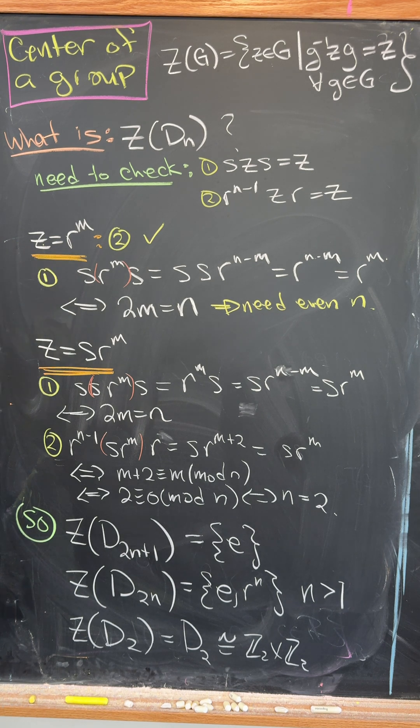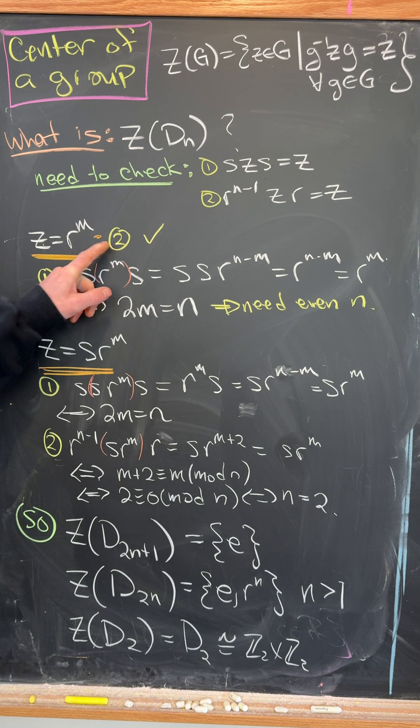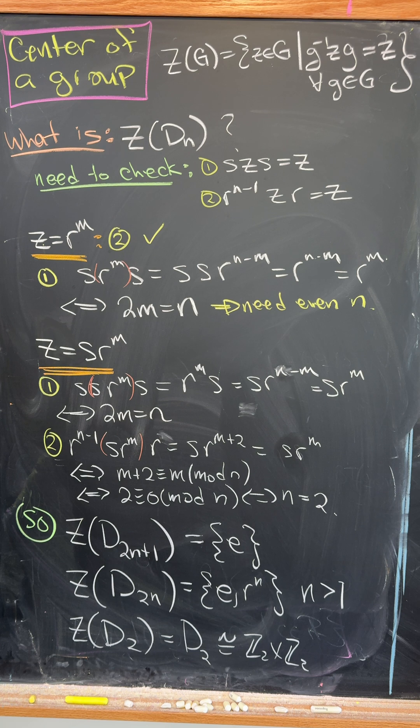So let's suppose we've got a central element that's a rotation R to the M. So notice that it's automatically gonna commute with all of the rotations, so we just have to check if it commutes with the reflection S. But that's only gonna be possible if N was even and M was half of N.